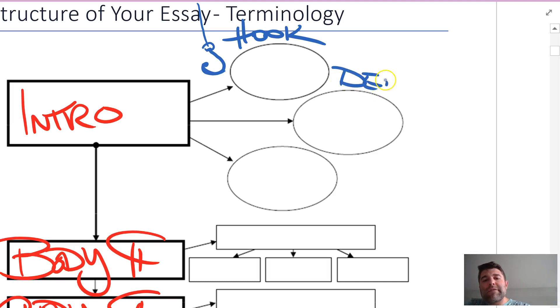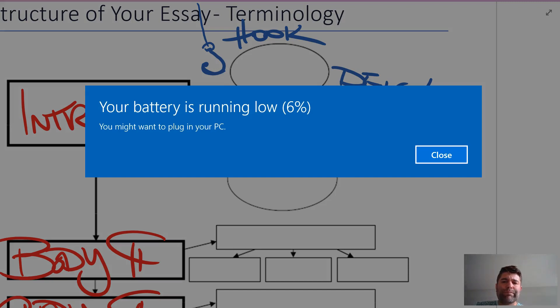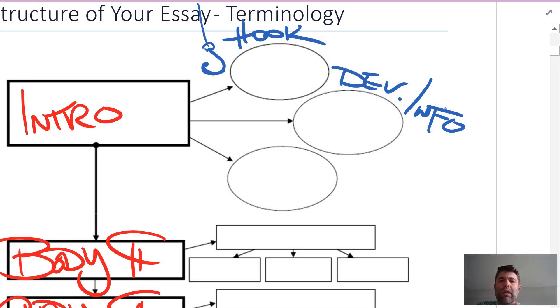Then we've got that developing information that we talked about earlier. The developing info is really needed. This is all of that information that your reader does need to know about your topic. You'll see that later in the introduction notes on how to put together that great introduction. We'll highlight together all of the developing information that goes into putting your paragraph together.